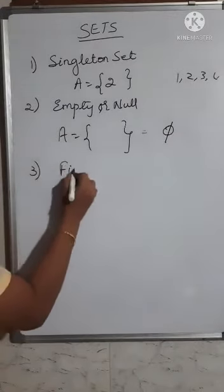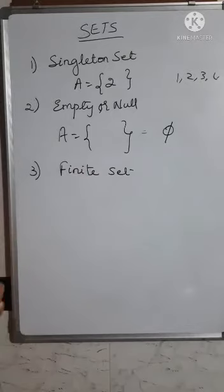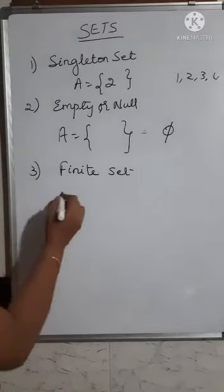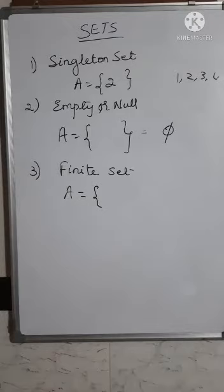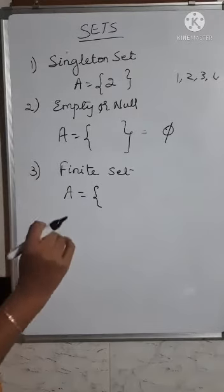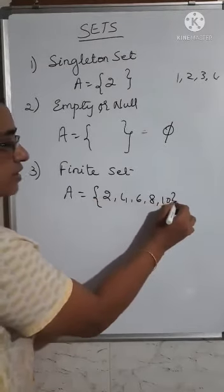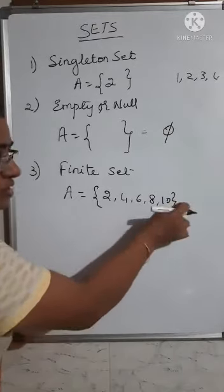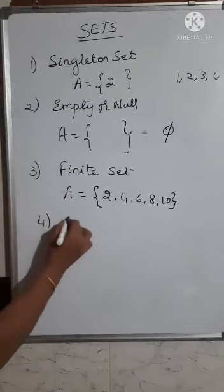The third type is a finite set. The word itself tells you — finite set means you should have a finite number of elements in it. For example, set of even numbers till 10: you write 2, 4, 6, 8, and 10. You don't go beyond that. You have a countable number of elements, so such a set is called a finite set.